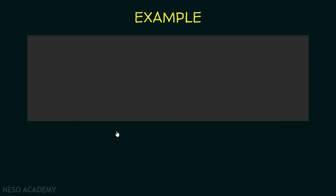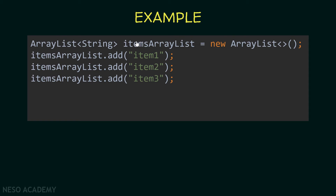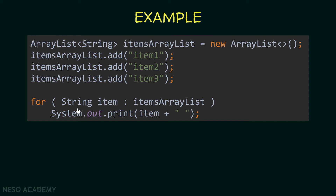We will start with the array list called items_array_list. To iterate over it using a for-each loop, we use the for keyword, and in parentheses I'm declaring a string and calling it item. Notice that the type of this variable should be compatible with the type of the array or the array list. In this case, we have an array list of strings, which is why I'm declaring a string. The name of this string can be anything — we are simply declaring a variable.